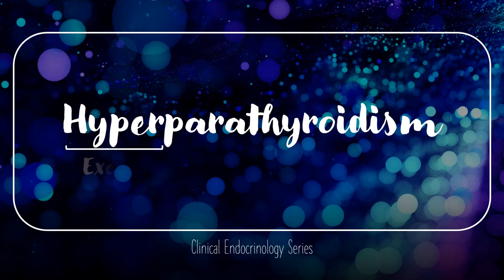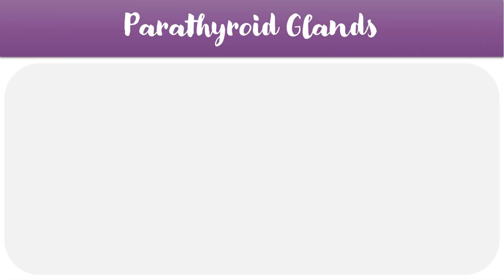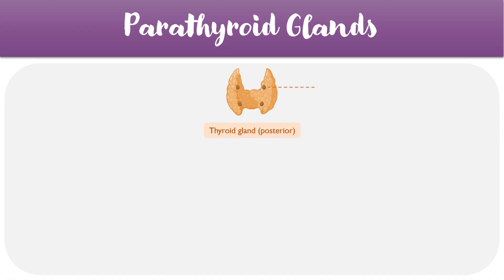Today we're going to be taking a look at hyperparathyroidism, which is a condition that involves excess levels of parathyroid hormone in the blood. The best place to start is by first understanding the basic anatomy and physiology of the parathyroid gland. We have four parathyroid glands in total, usually, which sit on the posterior aspect of the thyroid gland, with one of them being labeled here.